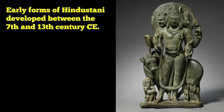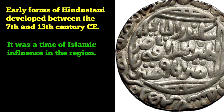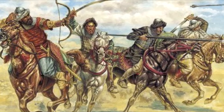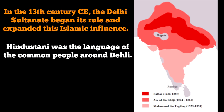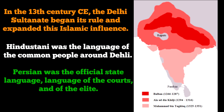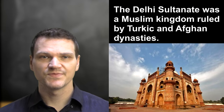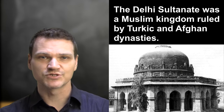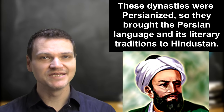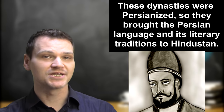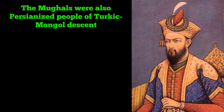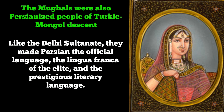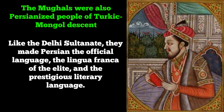Early forms of Hindustani developed between the 7th to 13th century CE, a time of heavy Islamic influence on the Indian subcontinent due to conquests by Central Asian Turkic invaders. Then in the 13th century CE, the Delhi Sultanate began its rule and expanded this Islamic influence. Hindustani was the language of the common people around Delhi, while Persian became the official state language and language of the courts and the language of the elite. The Delhi Sultanate was a Muslim kingdom, ruled by successive Turkic and Afghan dynasties. These dynasties were Persianized, meaning that they looked up to and admired Persian culture, so they brought the Persian language and its literary traditions with them to Hindustan. They also spoke their own native languages, among them Turkic languages. They were followed by the Mughal Empire in 1526 — another Persianized people of Turkic-Mongol descent — and like the Delhi Sultanate, they introduced Persian as the official language of the Empire, the lingua franca of the elite, and the prestigious literary language.